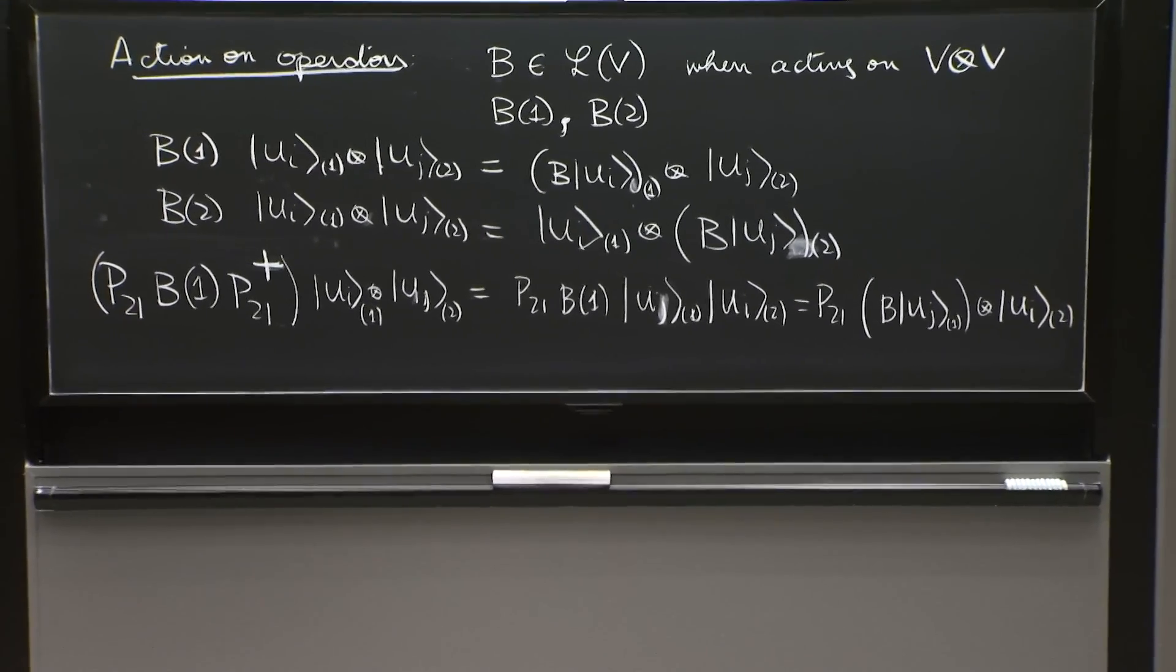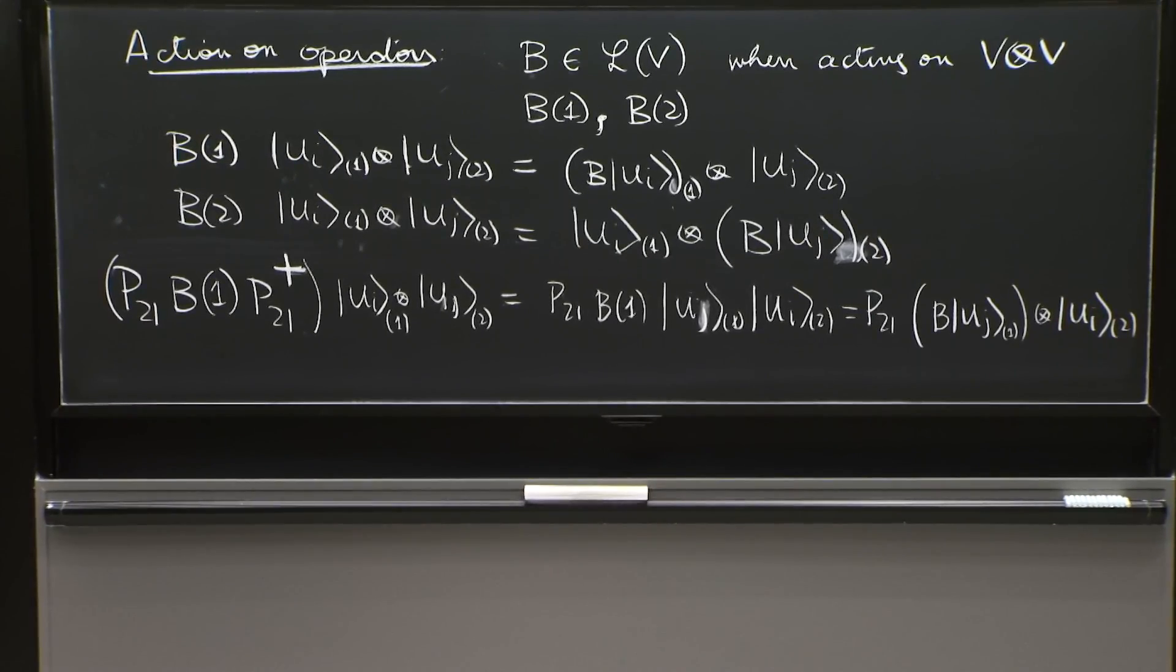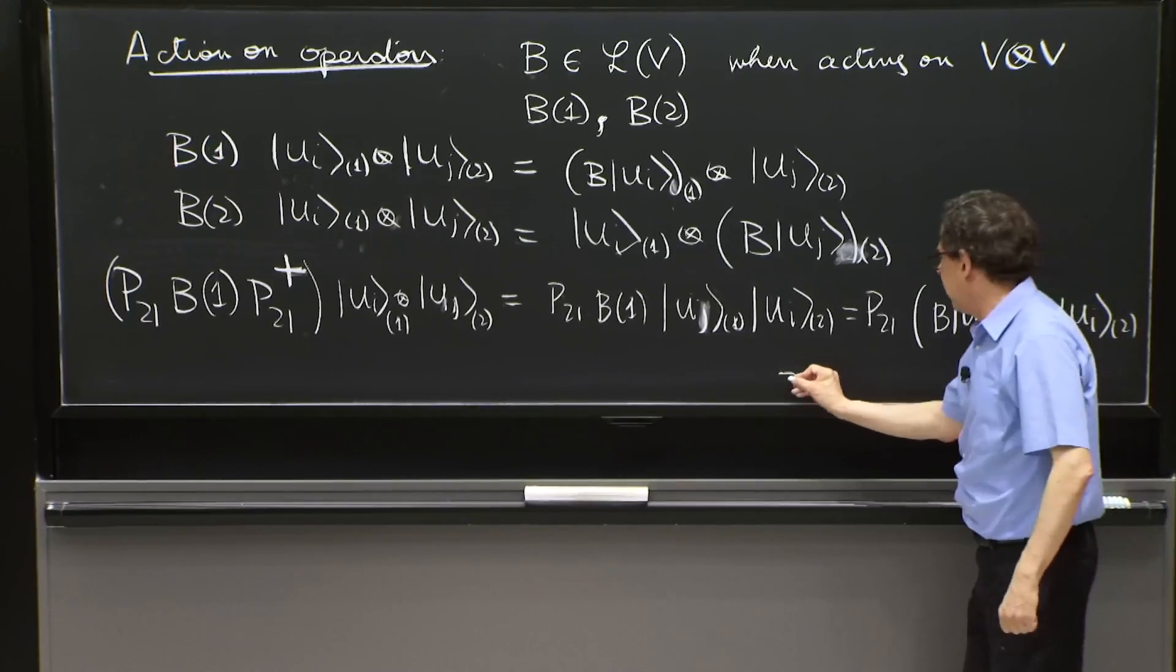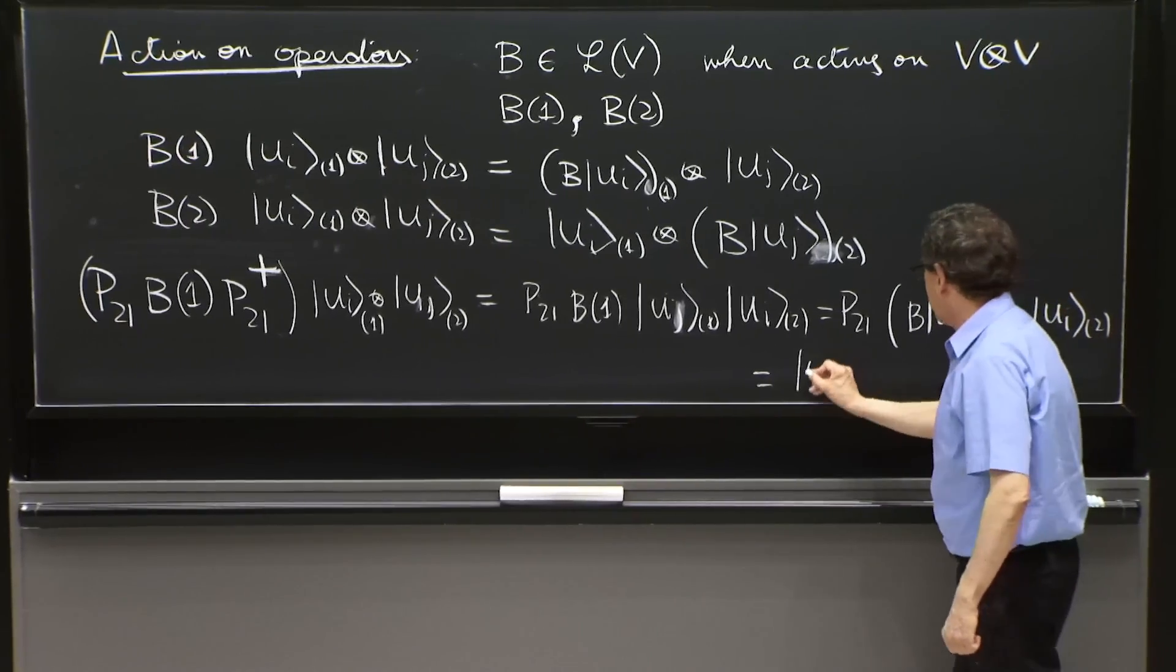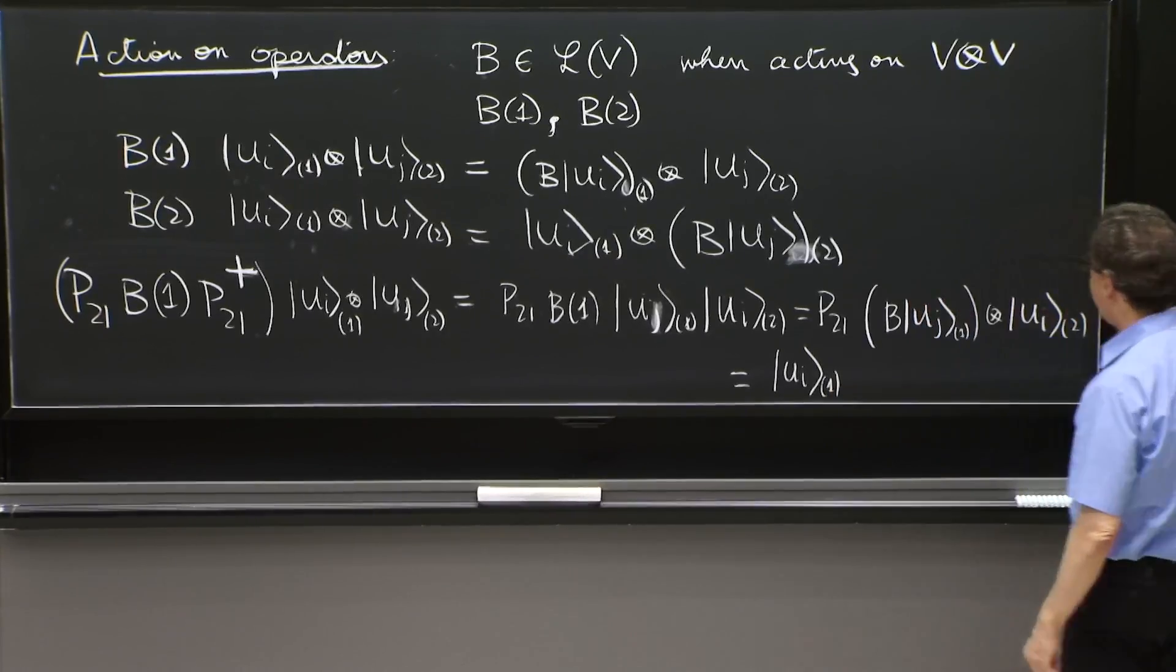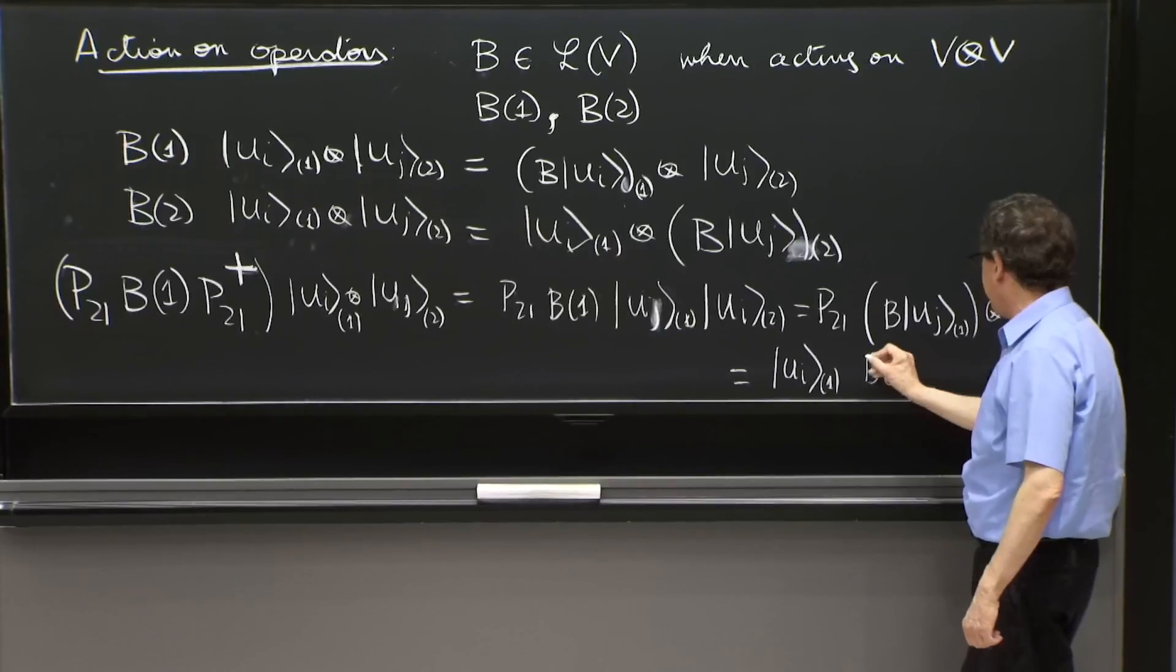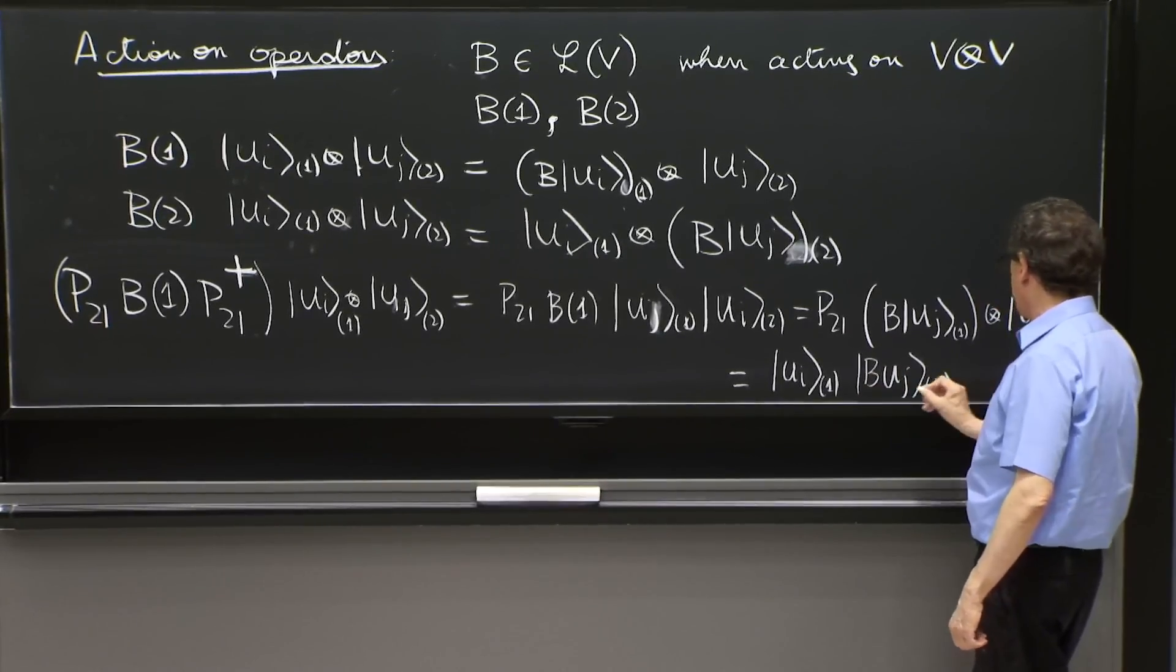Now P21 is supposed to put the second state in position 1 and the first state in position 2. So this is ui1, B, uj2.